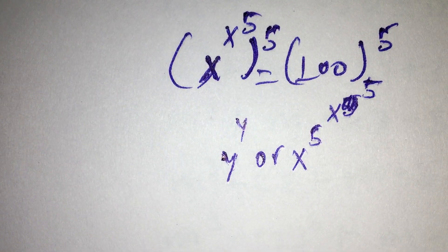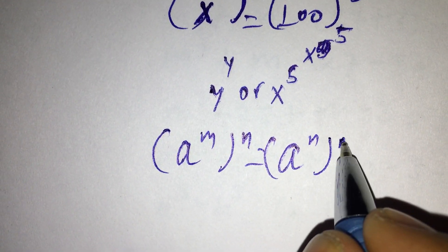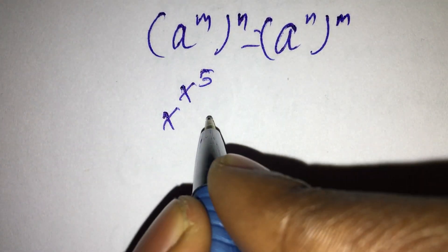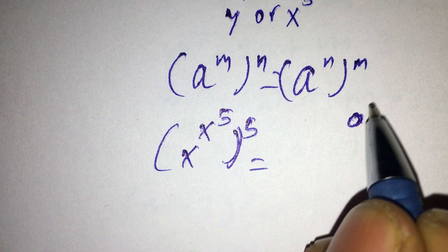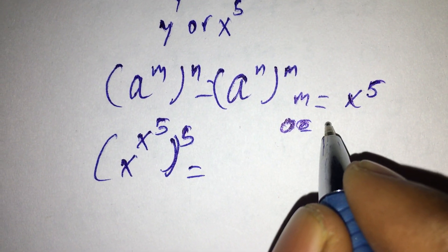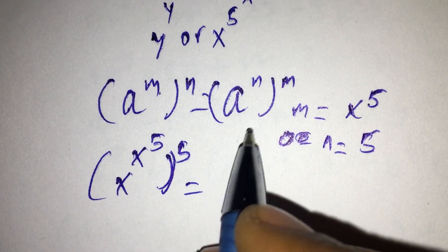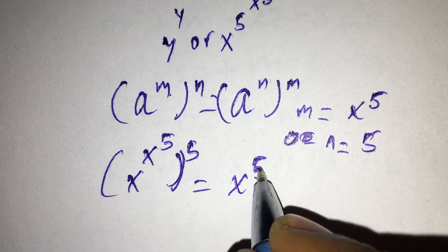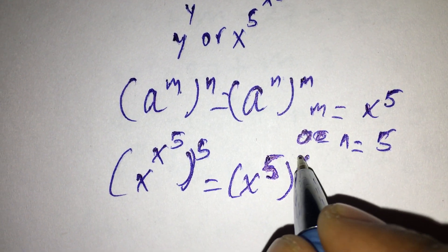So here we will apply this formula: A to the power of m times n, equal to A to the power of n times m. So x to the power of 5, times 5, equal to... here, n equals x to the power of 5. So there is a power of n. So x to the power of 5, the whole x to the power of 5 times x to the power of 5.